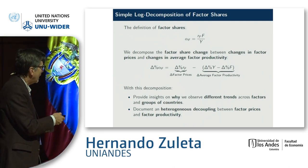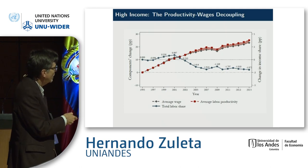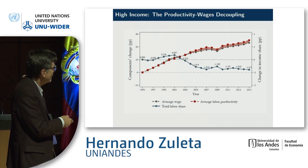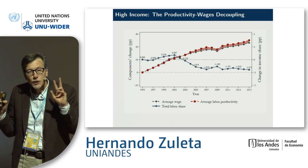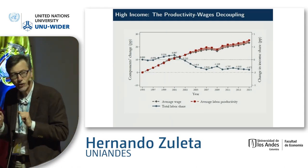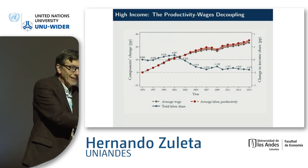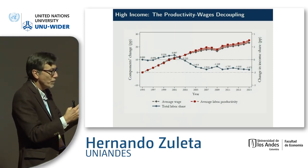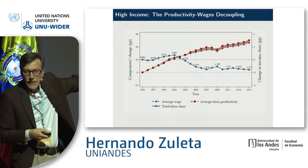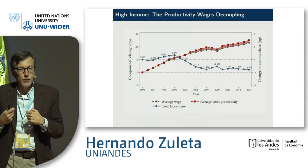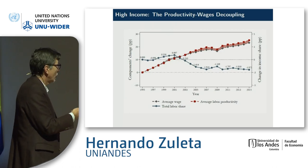We do this decomposition for all the factors. For high-income countries, looking at total labor share, average labor productivity goes above factor prices. We can interpret this in two ways: one is a political or institutional or bargaining story — firms are getting a higher part of the production of each worker, causing redistribution from workers to firms. The other is that, with robotization and technological change, firms need fewer workers and for this reason wages are going below average labor productivity.